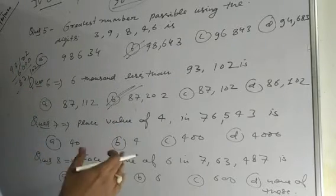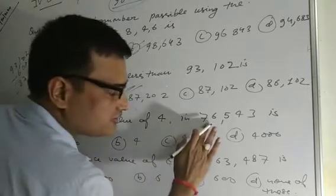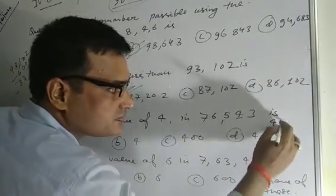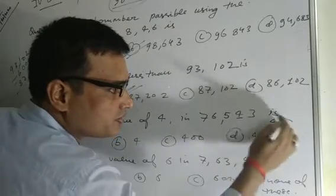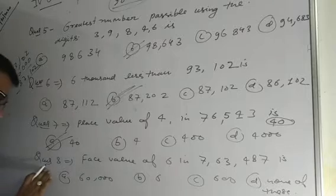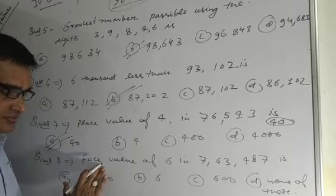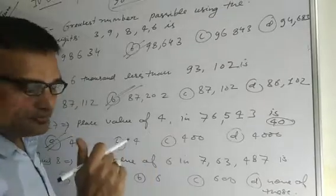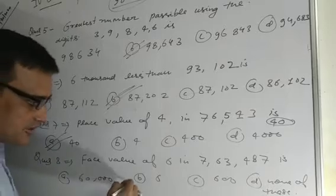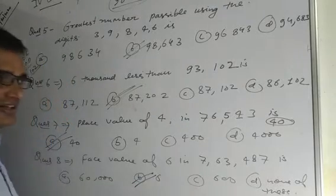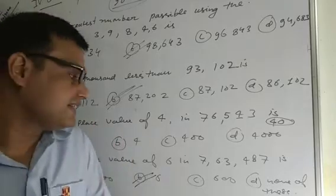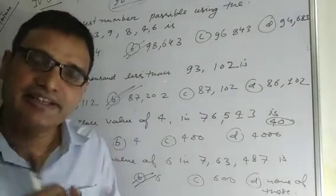Question number 7. Find the place value of 4 in 76,543. Here you can see the digit 4 is in the tens place, so its place value is 40. Therefore, option A is the correct answer. Question number 8. Find the face value of 6. The face value of any digit is equal to the digit itself, so the face value of 6 is 6. Face value simply represents the digit in any number. Therefore, option B is the correct answer.